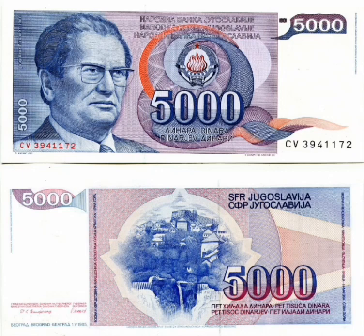In 1985, a new series of banknotes was issued, which began with the introduction of a 5,000 dinar banknote with the image of the deceased Yugoslav president, Josip Broz Tito. This, up to that time the largest and long-awaited banknote, caused a real storm in the public, and it continues today.